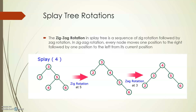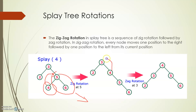The zig-zag rotation involves two kinds of rotations: a zig right rotation and a zag left rotation. Considering node 4, first a left rotation is done — node 4 moves to position 5, and 5 and 6 go down. Then node 4 is rotated in the right direction, so 4 comes up and 3 comes down. This is how a zig-zag rotation is performed.